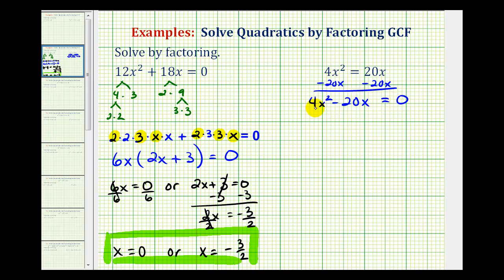And now we want to identify the greatest common factor of 4x squared and 20x, which would be 4x. But just in case we're not able to identify the greatest common factor, it may be helpful to write 4x squared as 2 times 2 times x times x. And then for 20x, since 20 is 4 times 5, we would have 2 times 2 times 5 times x.